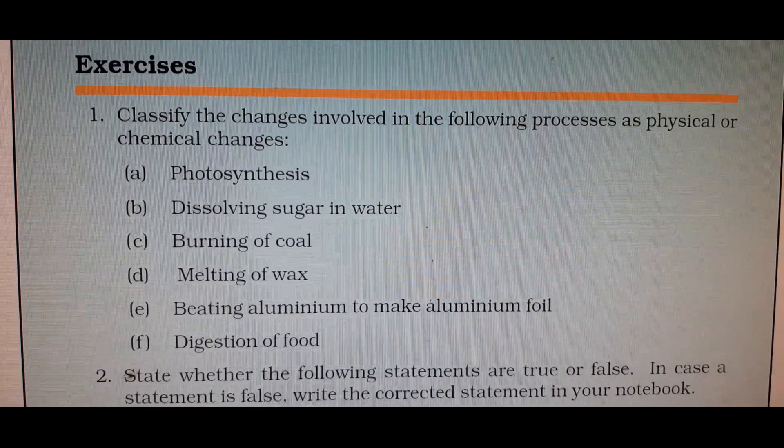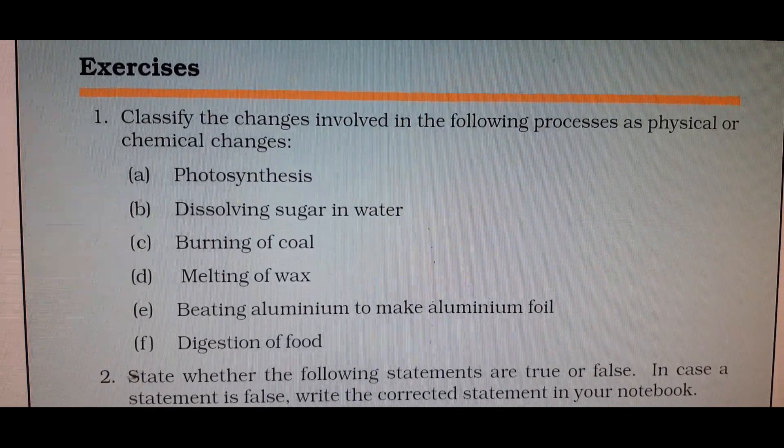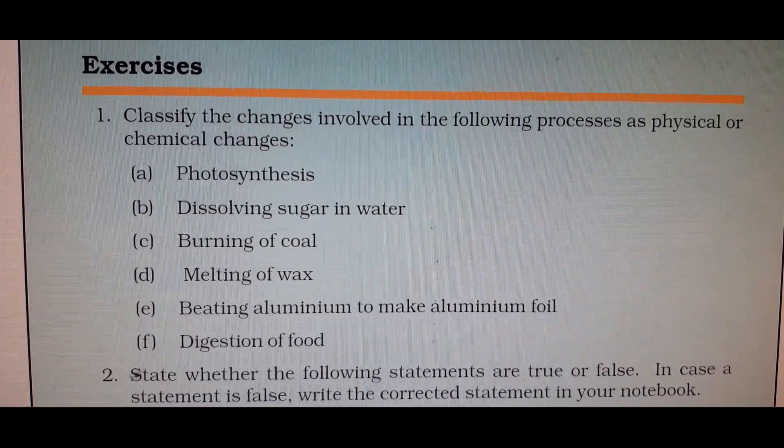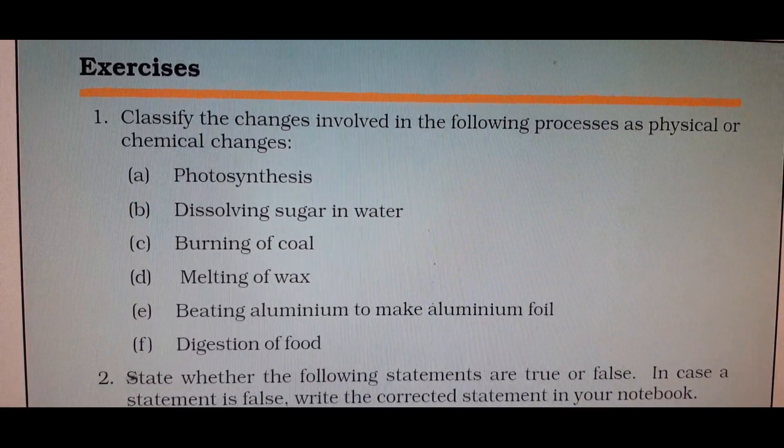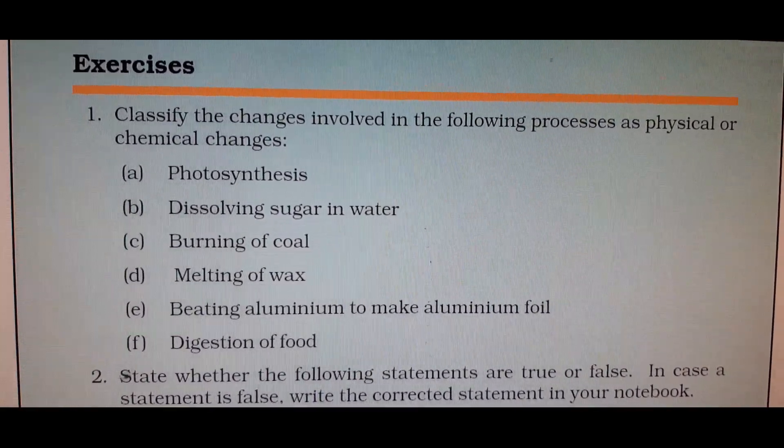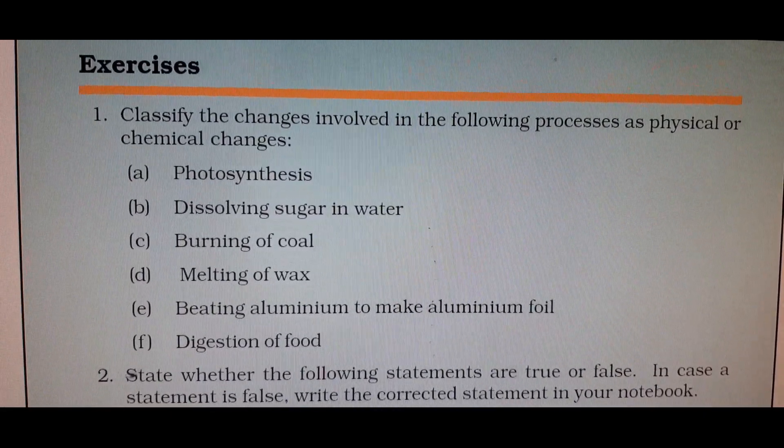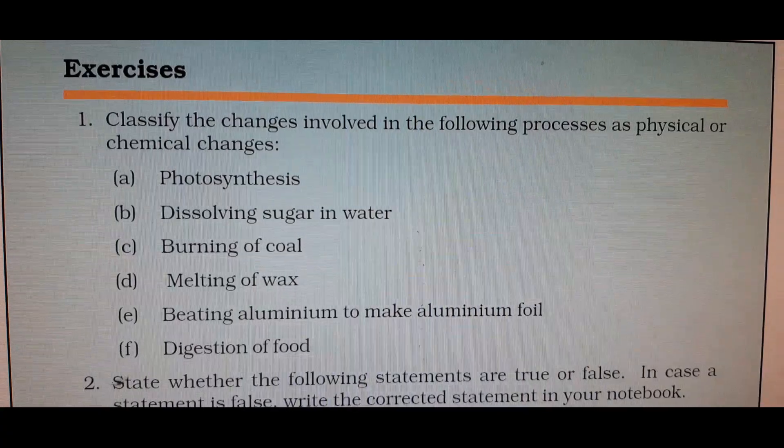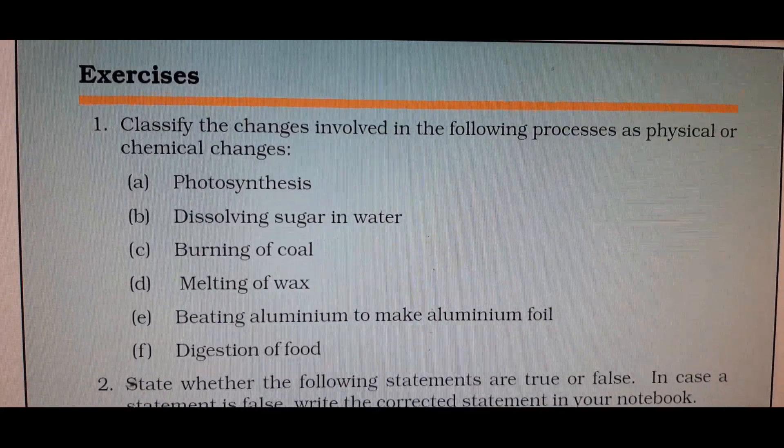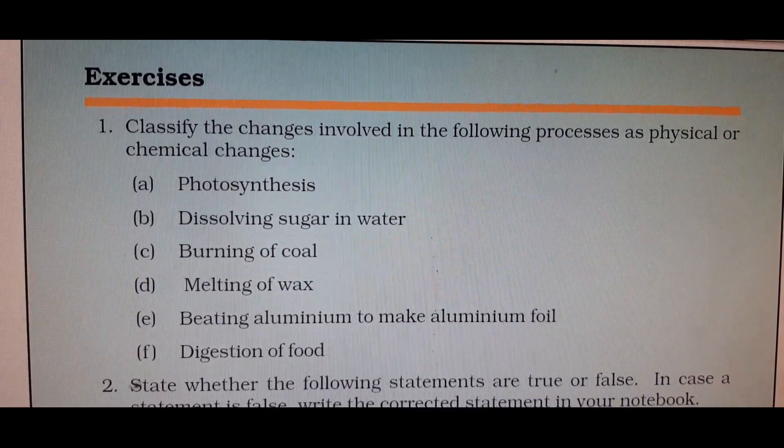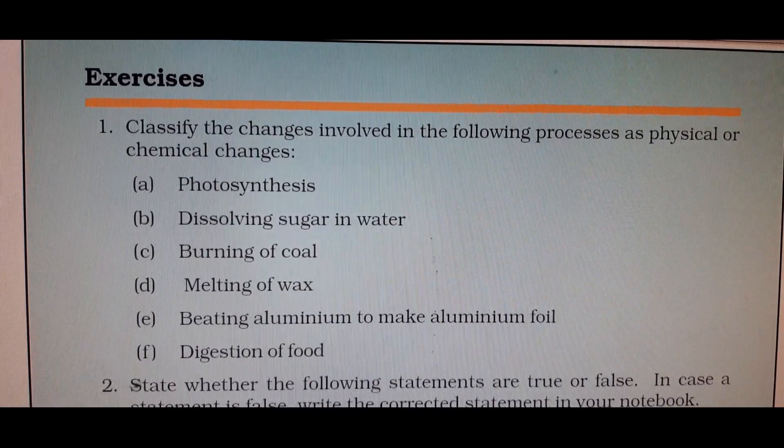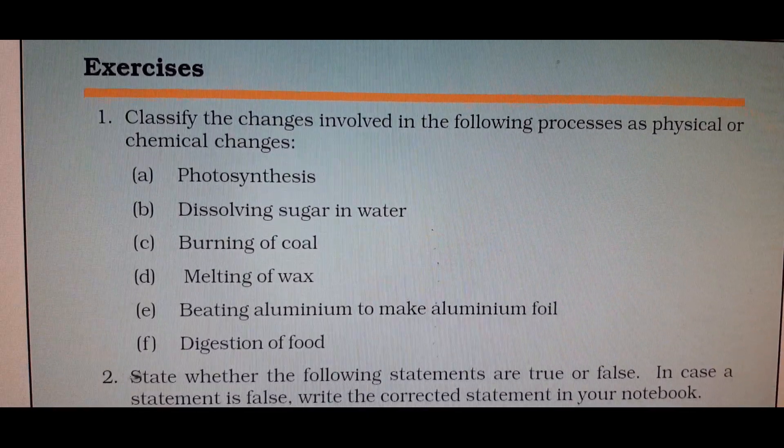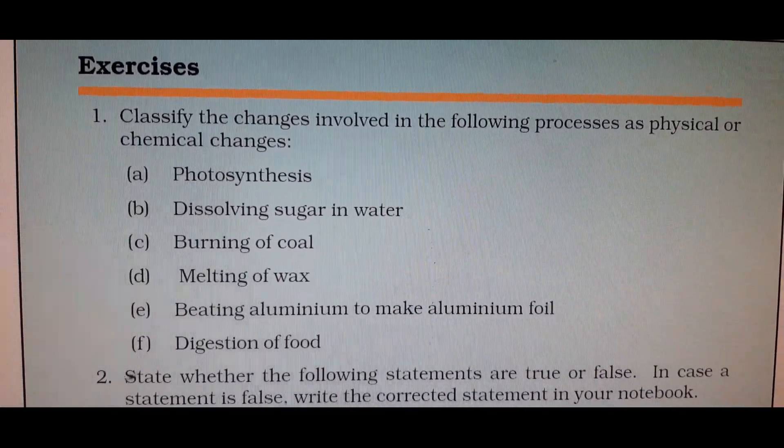Beating aluminum to make aluminum foil. When we beat aluminum, it forms aluminum foil because metals are very much malleable. They can be beaten into very thin sheets. Beating aluminum to aluminum foil is a physical change. Why? Because no new substances are formed. We are getting same aluminum foil only, the shape is changing though.